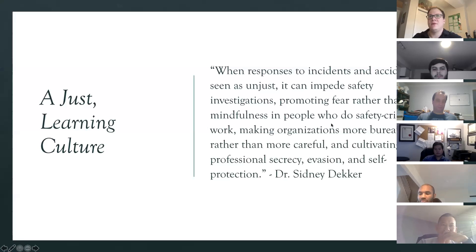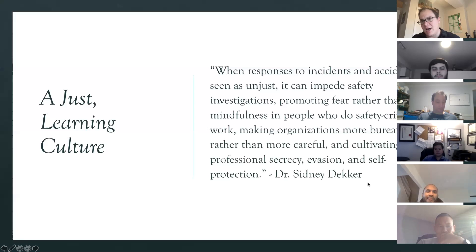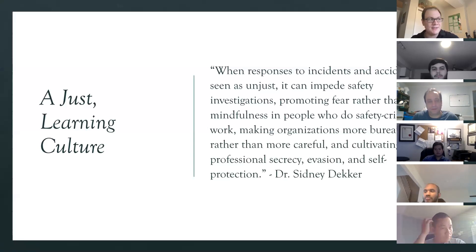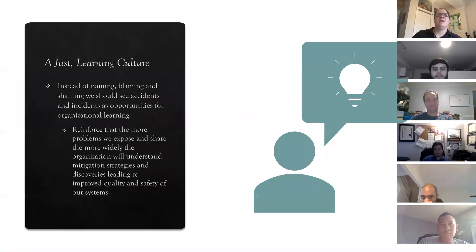Those two stories highlight the importance of how we react to things going wrong. When an accident occurs or somebody does something because they just didn't know any better, you have to take it as an opportunity to improve as a company — because it's probably not that they failed specifically, it's probably that your process failed. We didn't have anything in place to catch that, we didn't have proper supervision of our junior engineers. We want to encourage moving fast and breaking things, but we also want to make sure we're building a culture that's safe to do that. Instead of naming, blaming, and shaming, we want to see accidents as an opportunity for organizational learning.